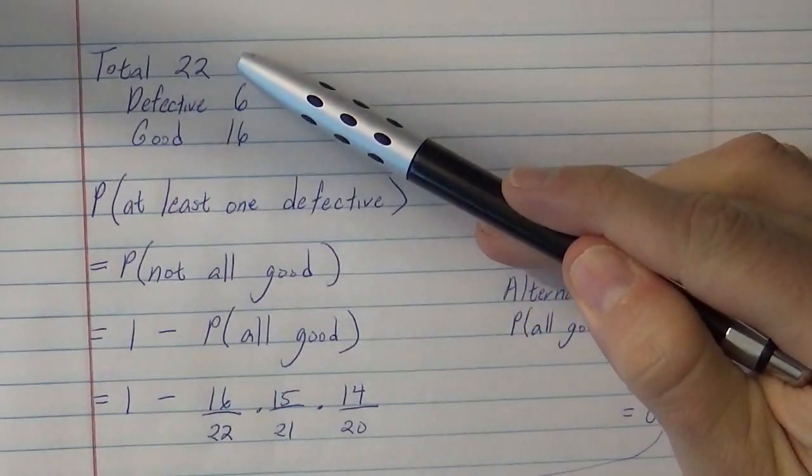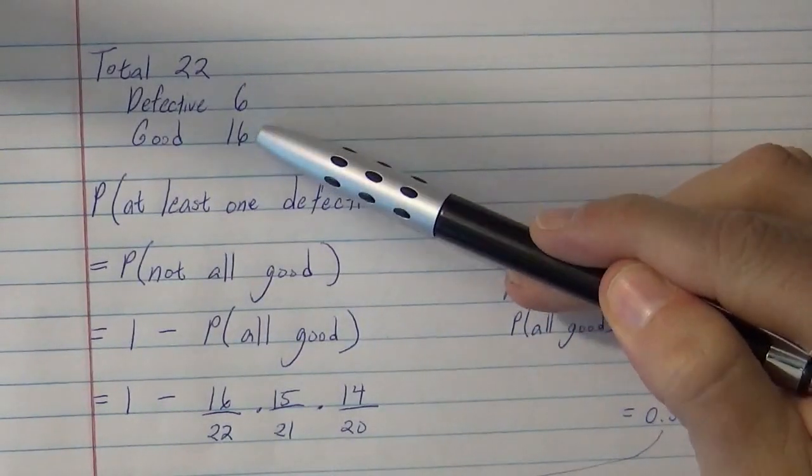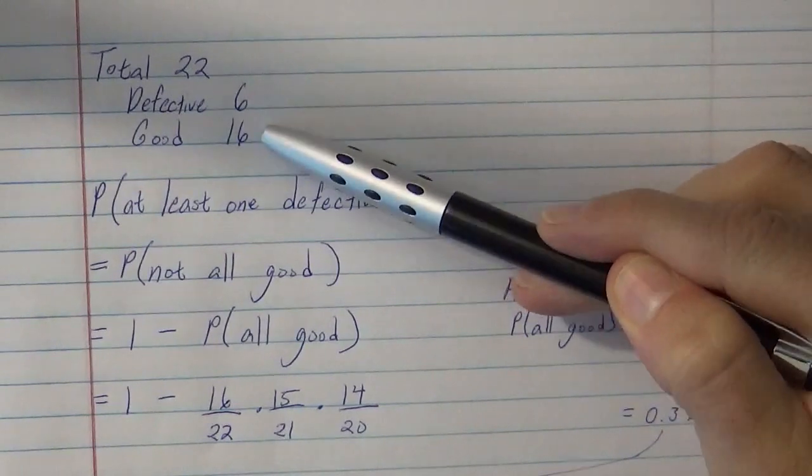So we're given that there are 22 total, 6 of them are defective, which means that there are 16 that are good.